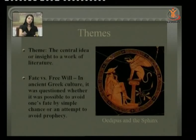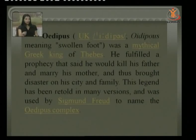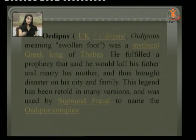Oedipus means 'swollen foot' — we will get to know how. He was a mythical Greek king of Thebes who fulfilled a prophecy that he would kill his father and marry his mother, thus bringing disaster on his country and family. This legend was retold in many versions and was used by Sigmund Freud to name the Oedipus complex, a psychological term.